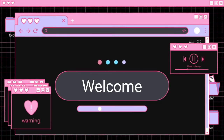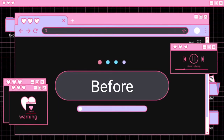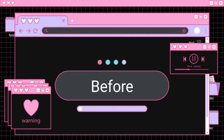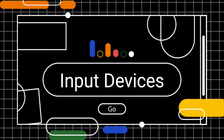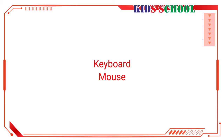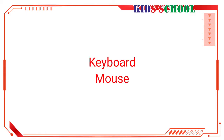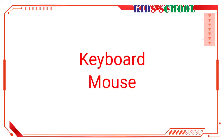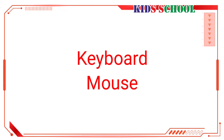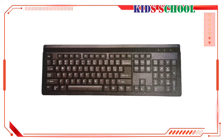Dear students, welcome to the classroom. In the previous video we learned the definition, functions, and parts of a computer. Today we are going to learn the parts of a computer in detail. The keyboard and the mouse are two input devices — they are used to enter data or instructions into the computer.